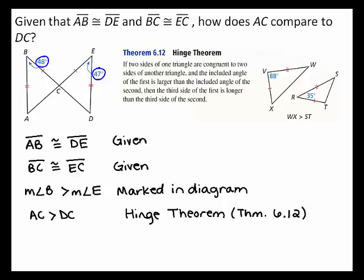So, by the hinge theorem, the length of side AC is greater than the length of side DC. Therefore, the length of side AC is greater than the length of side DC.